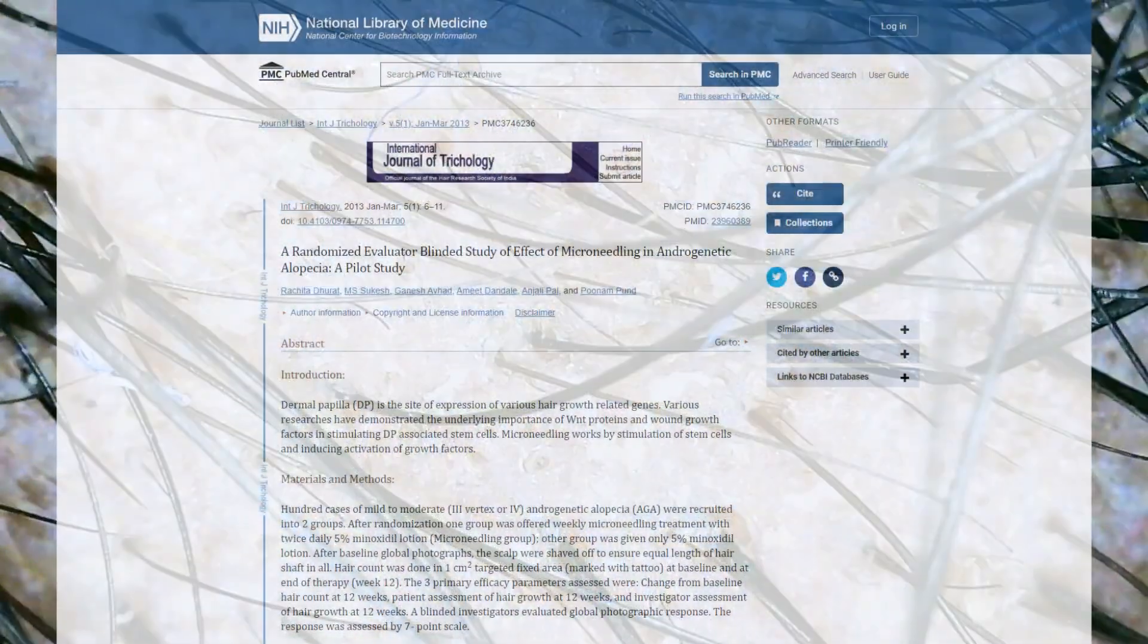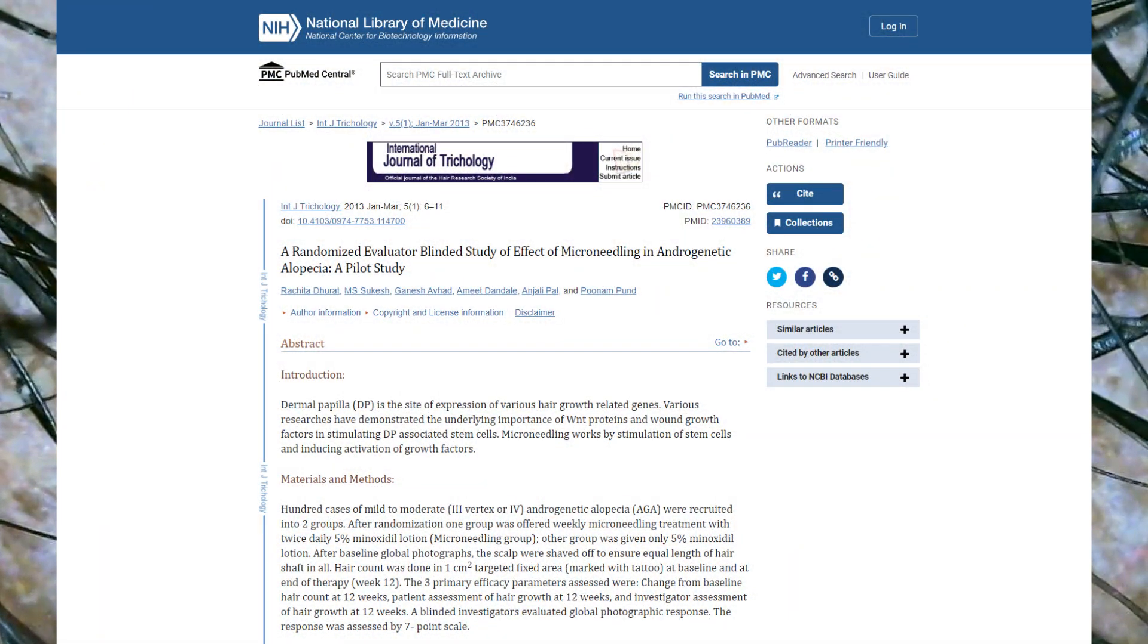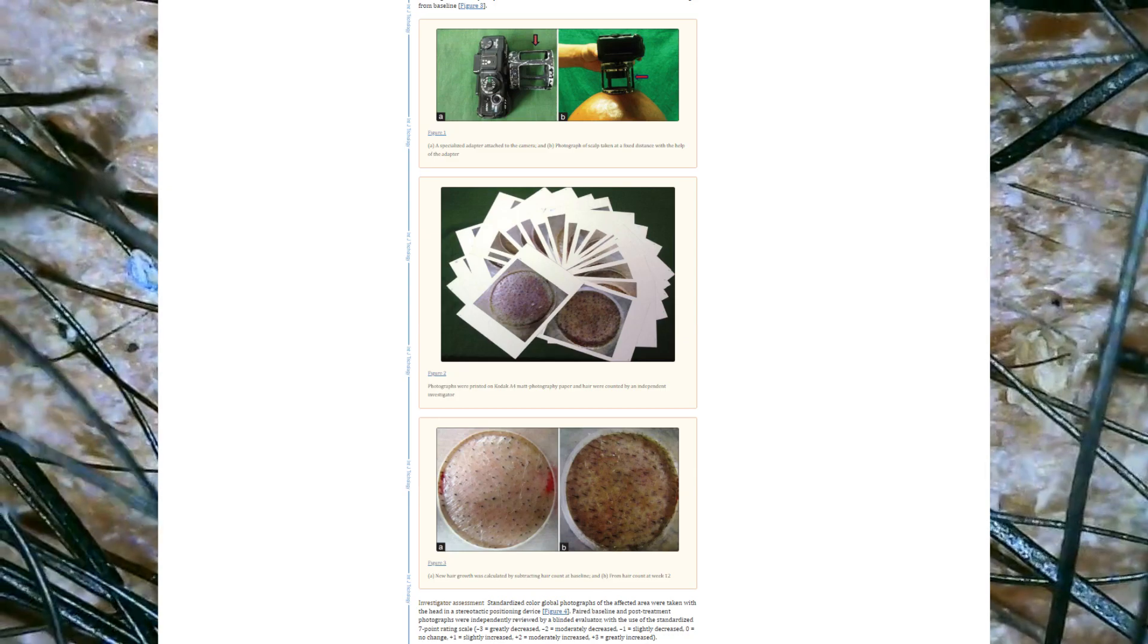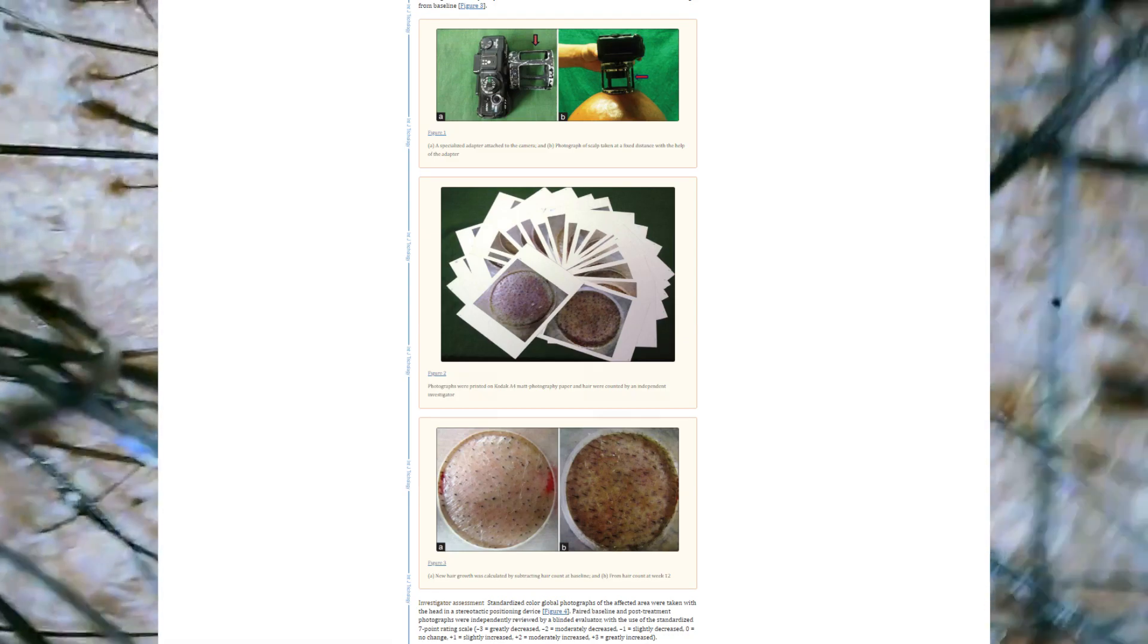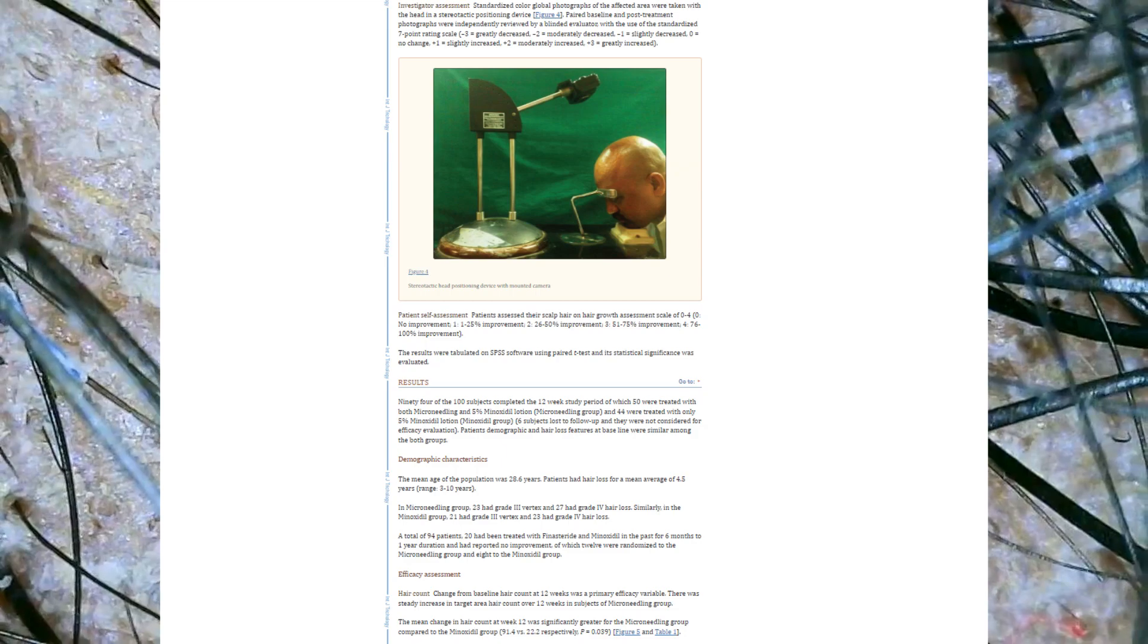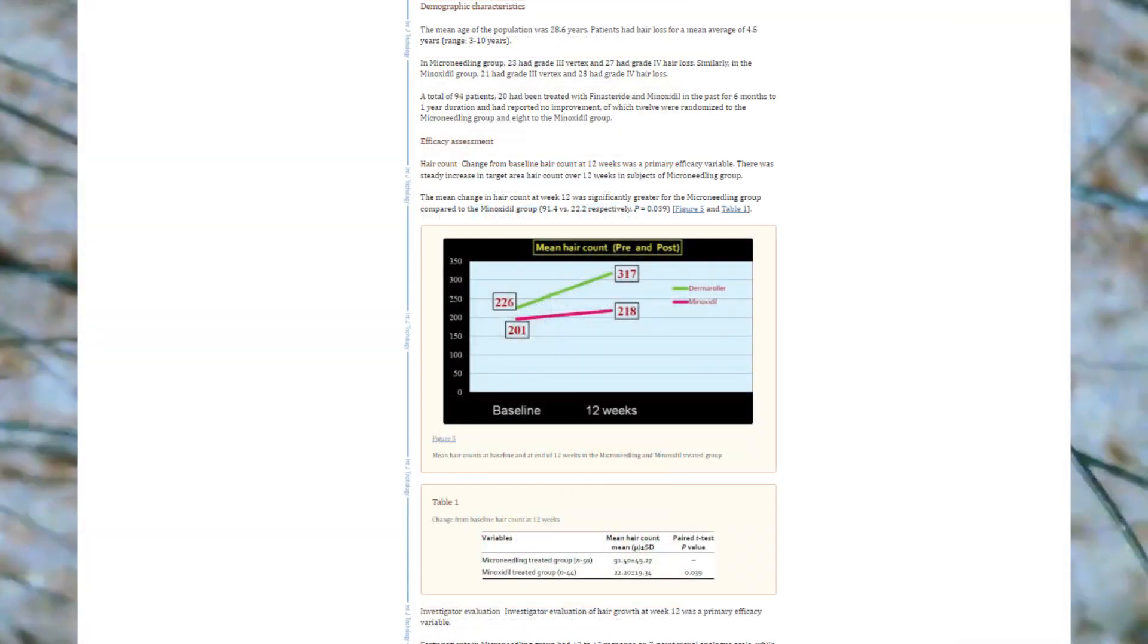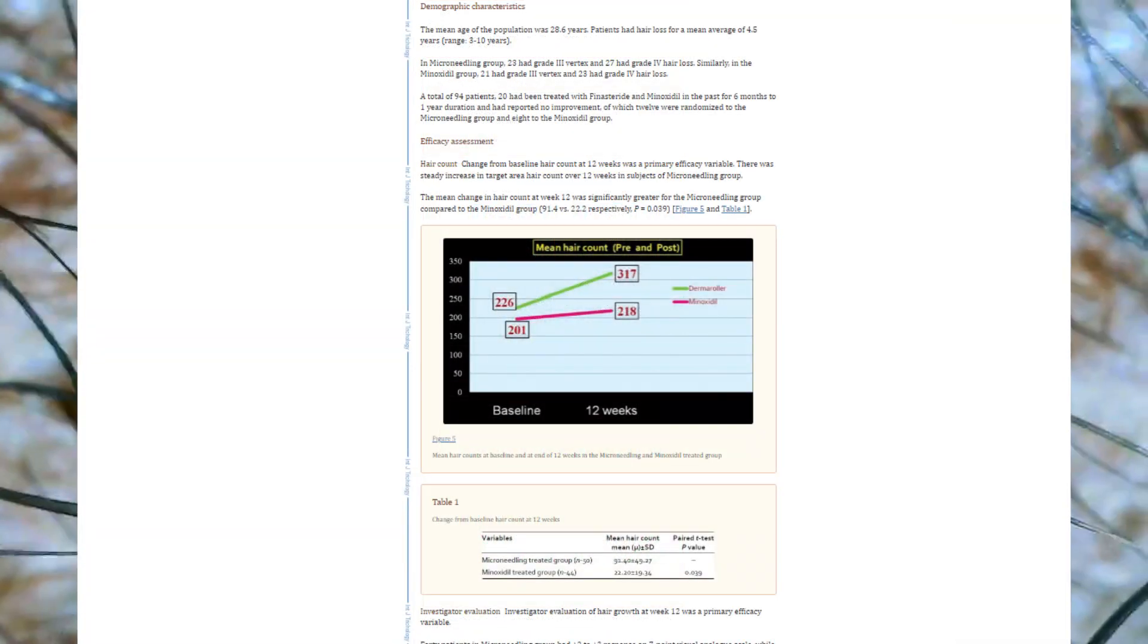Microneedling has been shown to improve the absorption of topical products such as minoxidil, which is often used to treat hair loss. In a study by Durat et al. 2014, titled 'A Randomized Evaluator Blinded Study of the Effect of Microneedling in Androgenetic Alopecia,' it was found that microneedling significantly increased the absorption of topical products such as minoxidil when compared to its application without microneedling. This suggests that combining microneedling with topical treatments could potentially lead to better results for those seeking to regrow hair.